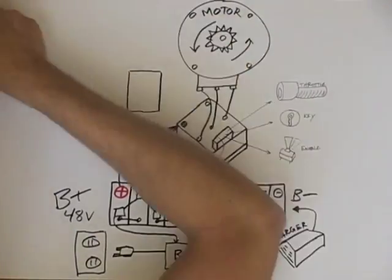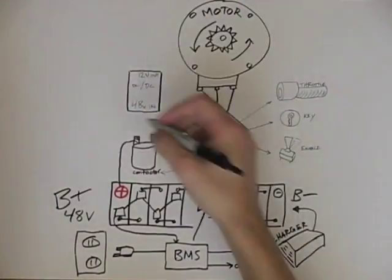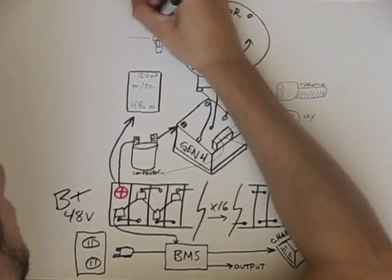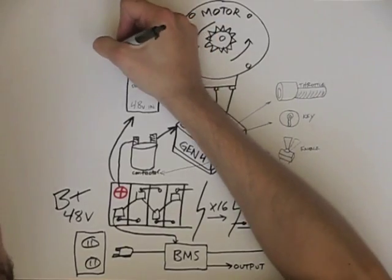Lastly is the DC to DC converter. This takes the 48 volts from the battery pack and drops it to 12 volts for our onboard accessories such as the lights, display lighting, and the horn.